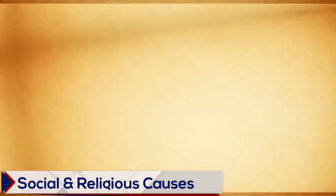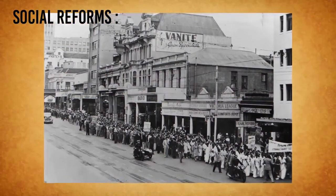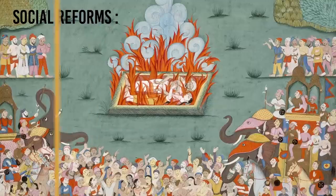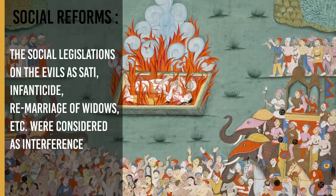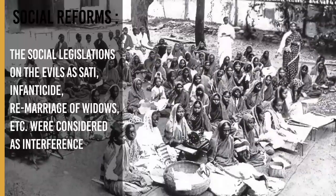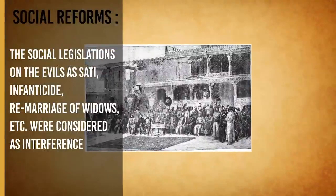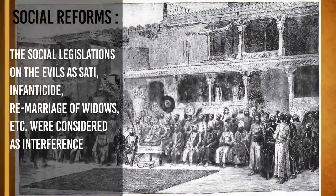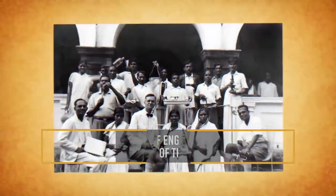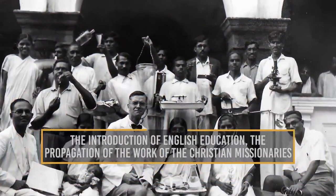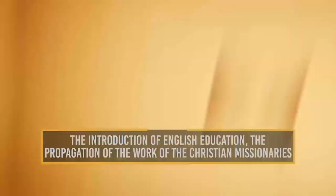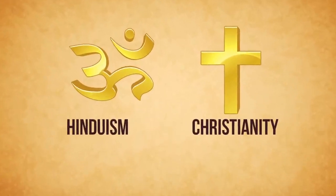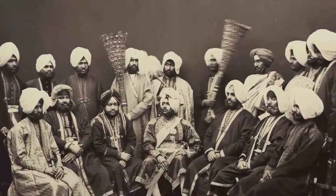Social and Religious Causes: The attempt to bring about social reforms in India by the British was not liked by the general public. Social legislation against evils such as sati, infanticide, and remarriage of widows were considered interference in the religious matters of Indians. The introduction of English education, the propagation of Christian missionaries, and the changing of Hindu law of property to facilitate conversion of Hindus to Christianity alarmed many orthodox Indians.